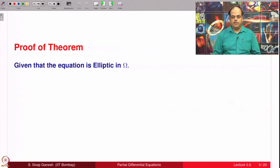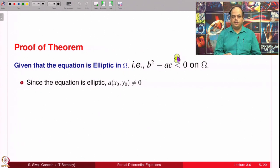The equation is given to be elliptic, meaning b² - ac is negative, less than 0 on omega. Since the equation is elliptic, we cannot have a to be 0. If a(x_0, y_0) is 0, we would have b² strictly less than 0, which is not correct because b² is always greater than or equal to 0. Therefore, necessarily a should be non-zero, and of course c also cannot be 0 for the same reason.